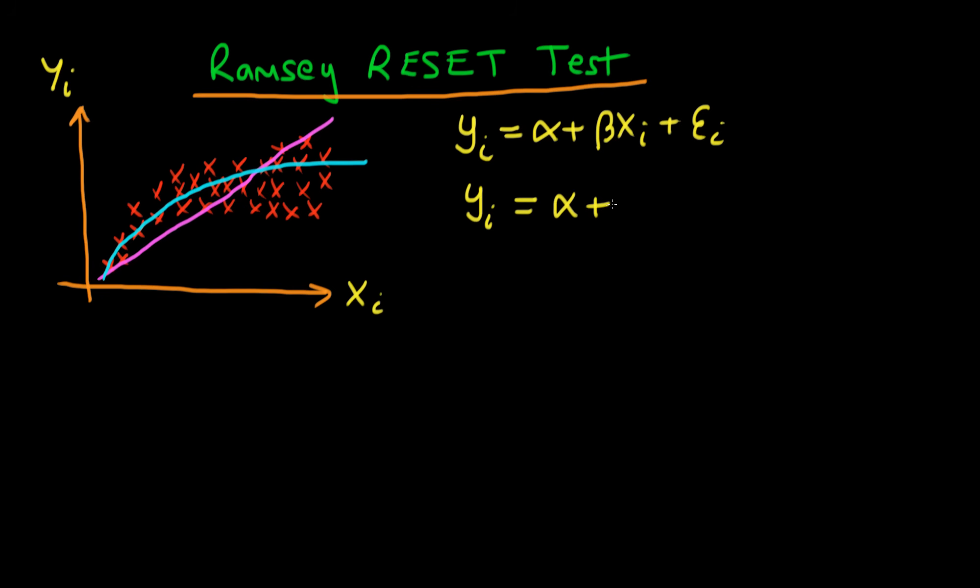So perhaps a better model would be to have yi equals alpha plus beta 1 times xi plus beta 2 times xi squared plus some sort of error. So the idea here is that we could test for functional misspecification in our original model by just including the quadratic term of xi and then just doing a t-test on its coefficient to see whether it's statistically different from zero.